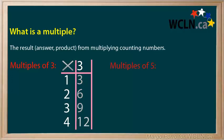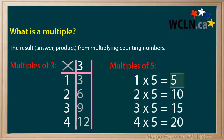The first four multiples of 5 are 5, 10, 15, and 20.